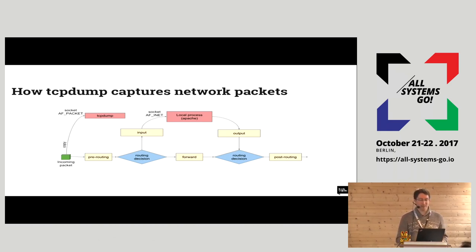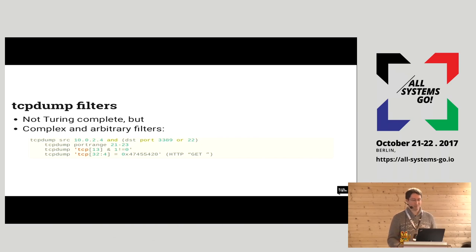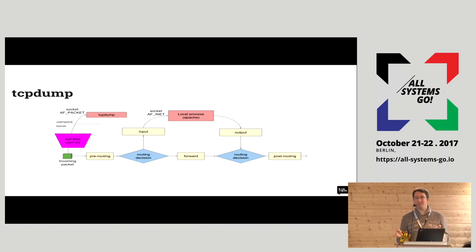How does tcpdump work? tcpdump creates a socket of type AF_PACKET and Linux makes a copy of all the packets. tcpdump has more features — you can filter what you want to receive. You can say you want only to see packets on port 80, or have more complex filters. You can even inspect packets to see if it is an HTTP GET or something like that. To do that, tcpdump defers that work to the kernel. The goal is that the tcpdump process doesn't need to be woken up for every single packet — instead the kernel runs a BPF filter, a small program that checks whether it's port 80 or port 22 or something like that, and only the matching packets are delivered to tcpdump.